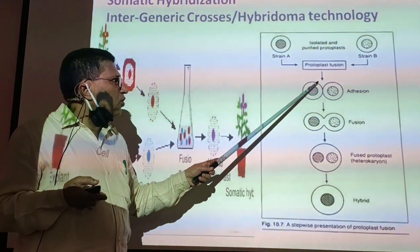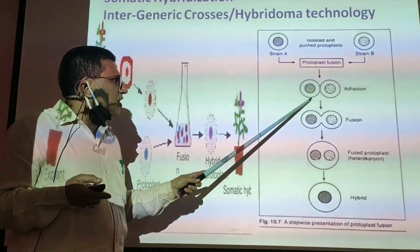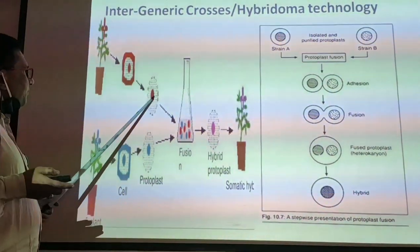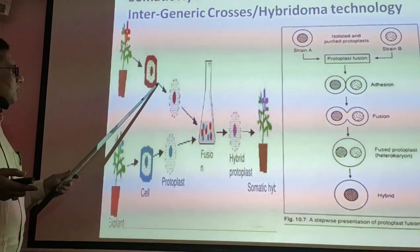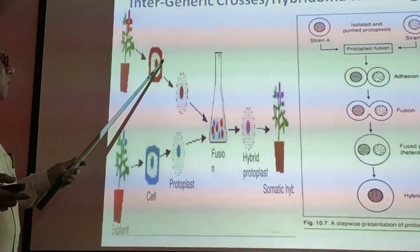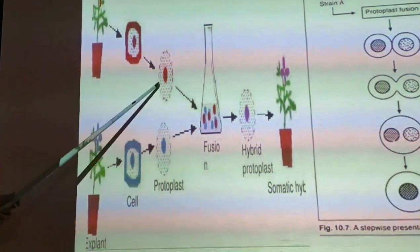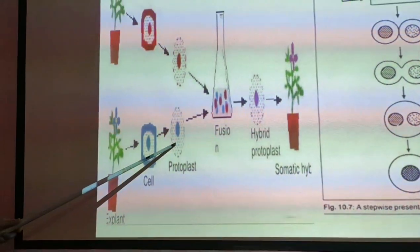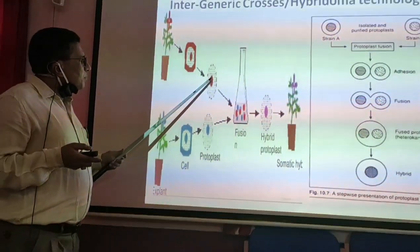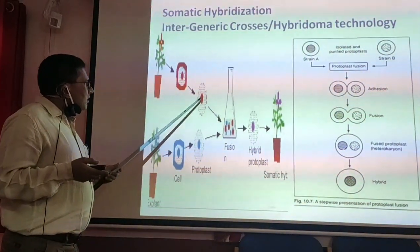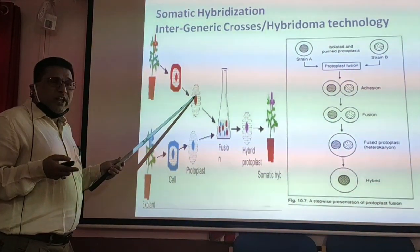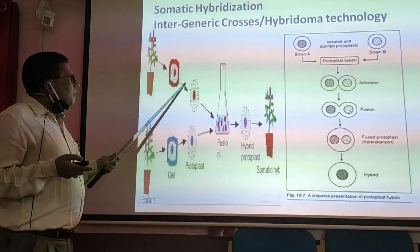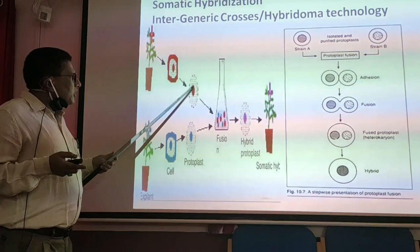As soon as cellulase enzyme is put, the wall of the cells will get dissolved so that the protoplasts get isolated. This is the cell wall. After we dissolve the cell walls of both potato and tomato plants, the protoplasts will get isolated. The protoplasts of potato are isolated and the protoplasts of tomato are isolated.